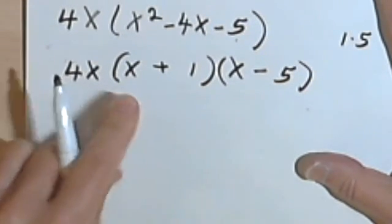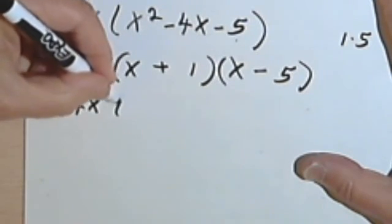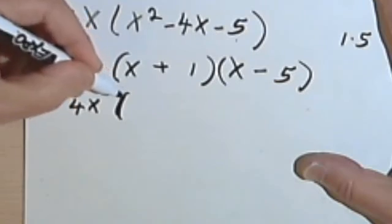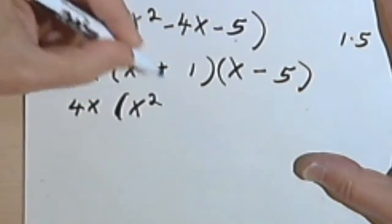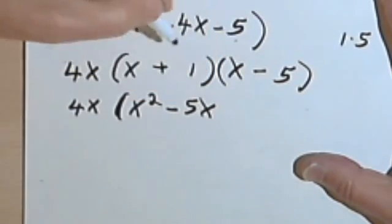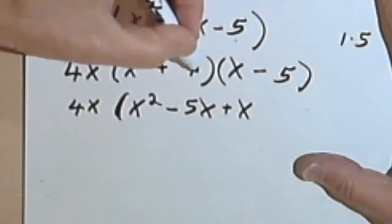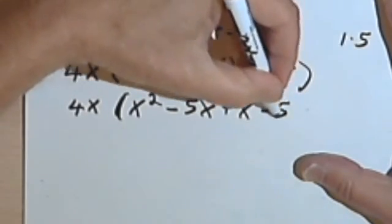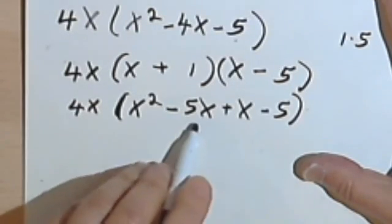So here's my 4x. Foiling out these two terms, I'm going to get x times x is x squared, x times negative 5 is negative 5x, 1 times x is x, and 1 times negative 5 is negative 5.